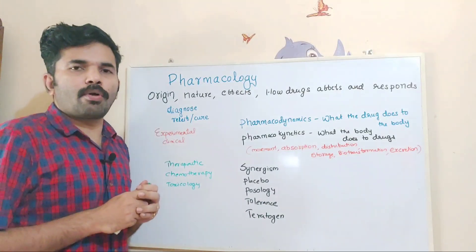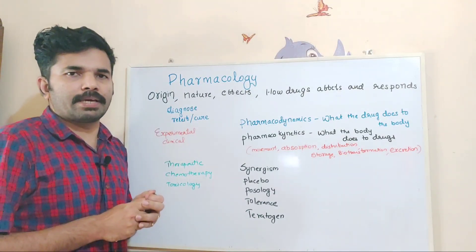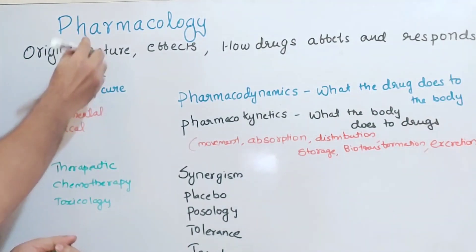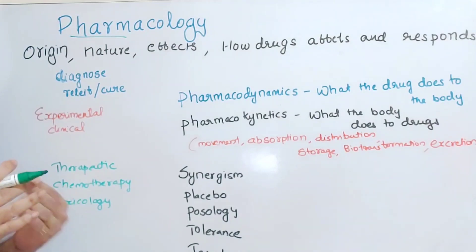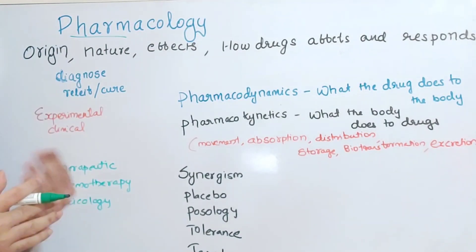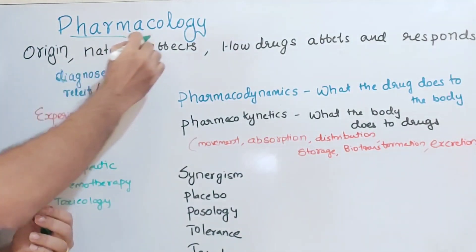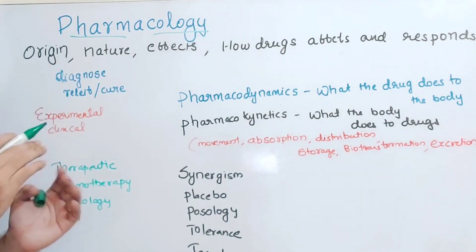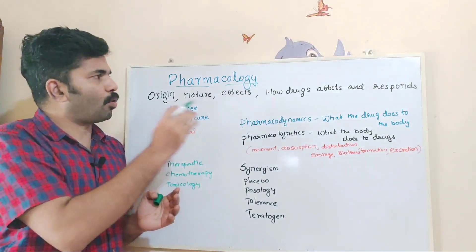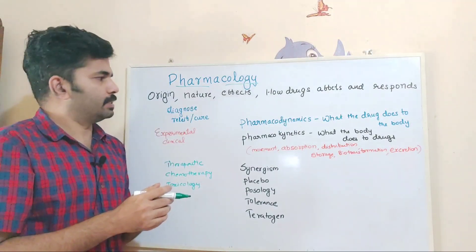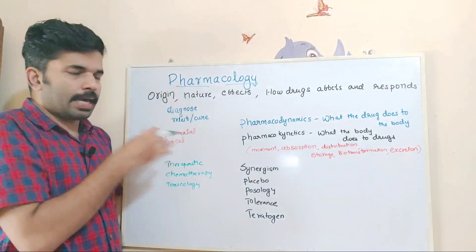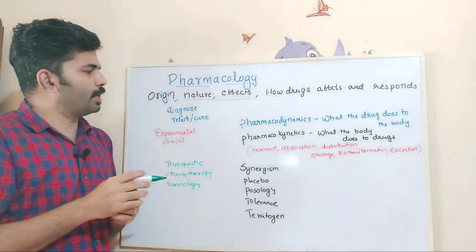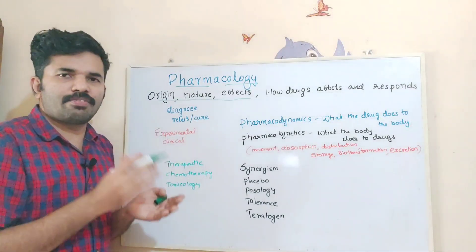So, pharmacology. Pharmacology — we will learn from the first question. Pharma means drugs or medicines. Pharmacology means study of medicines — specifically the study of origin, nature, and effects of medicines.